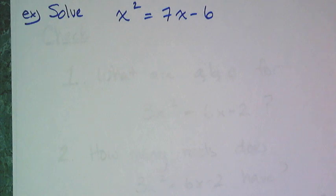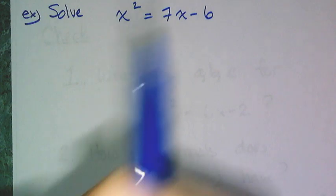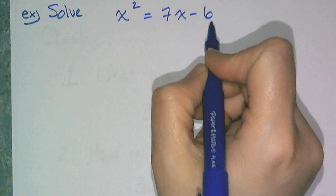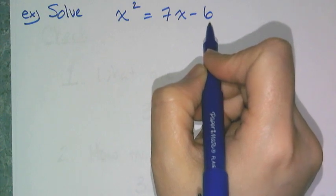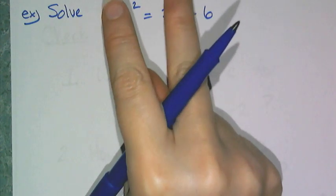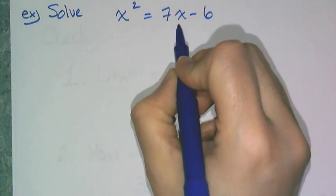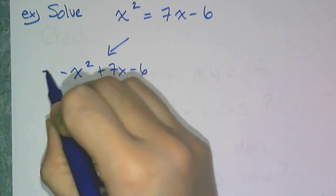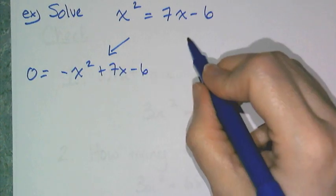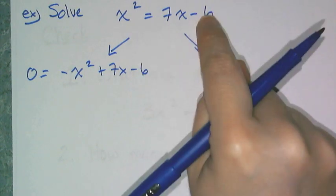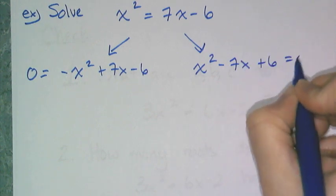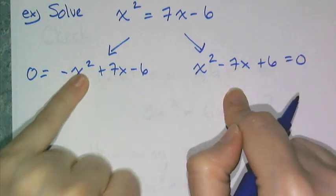Now let's do an example where we actually solve using the quadratic formula. So first things first, I have to check to make sure this is in the correct format. It is x squared equals 7x minus 6. It's not equal to 0, so I have to convert it equal to 0, and I have two options. Either I can subtract off the x squared and have negative x squared plus 7x minus 6 equaling 0, or I can keep the x squared positive and move these two terms over and get x squared minus 7x plus 6 equals 0.